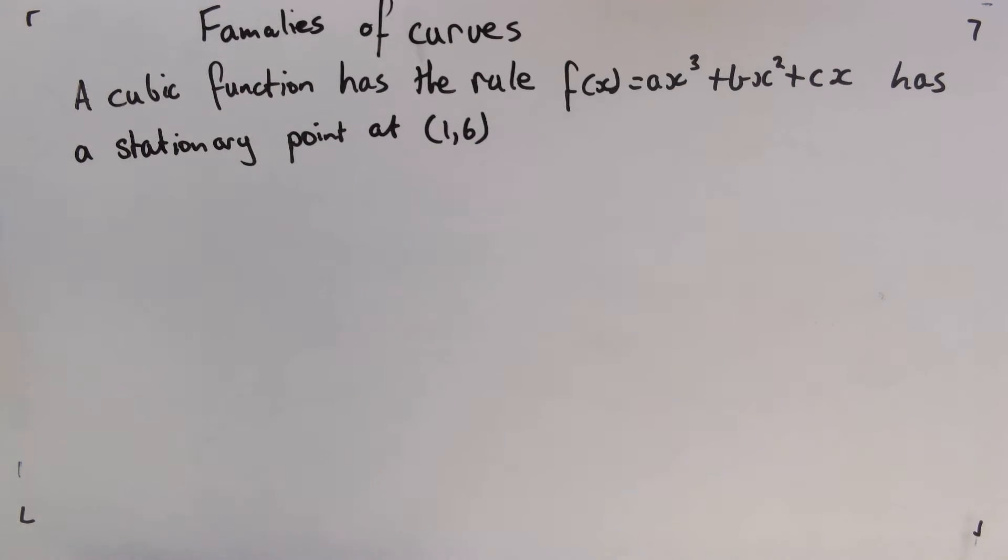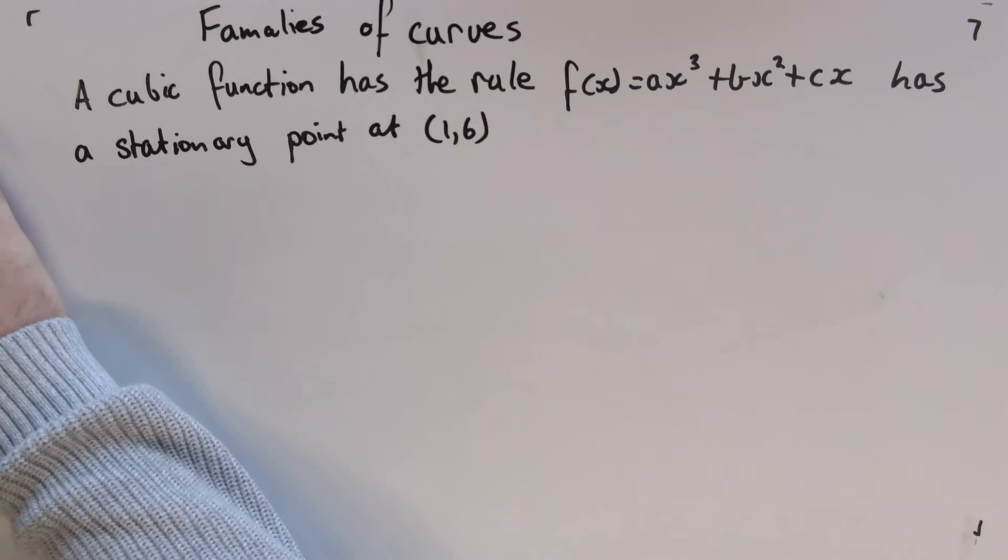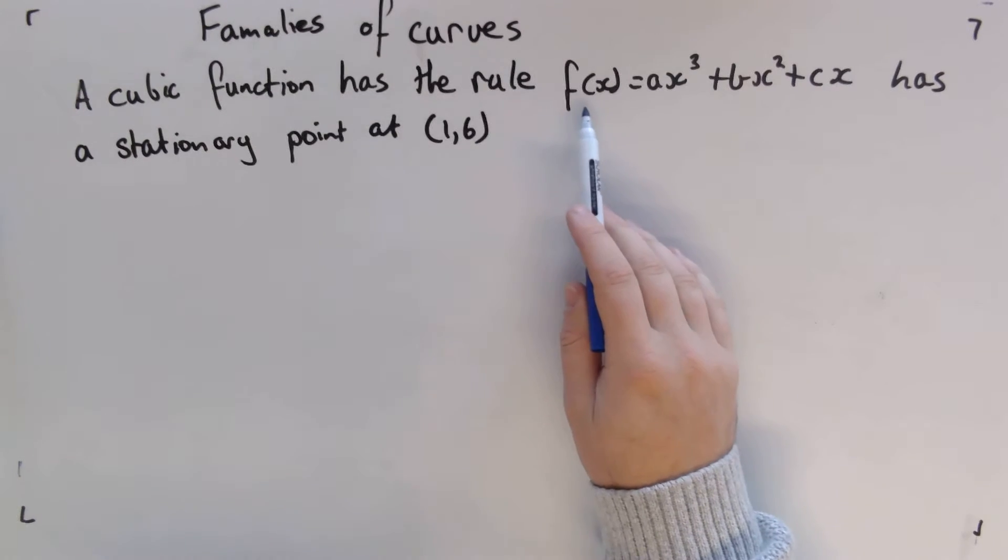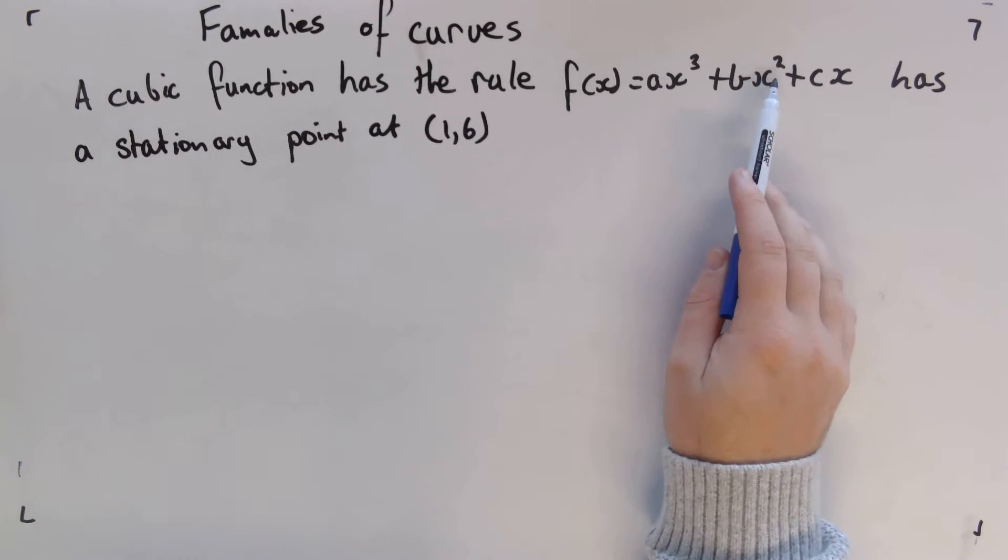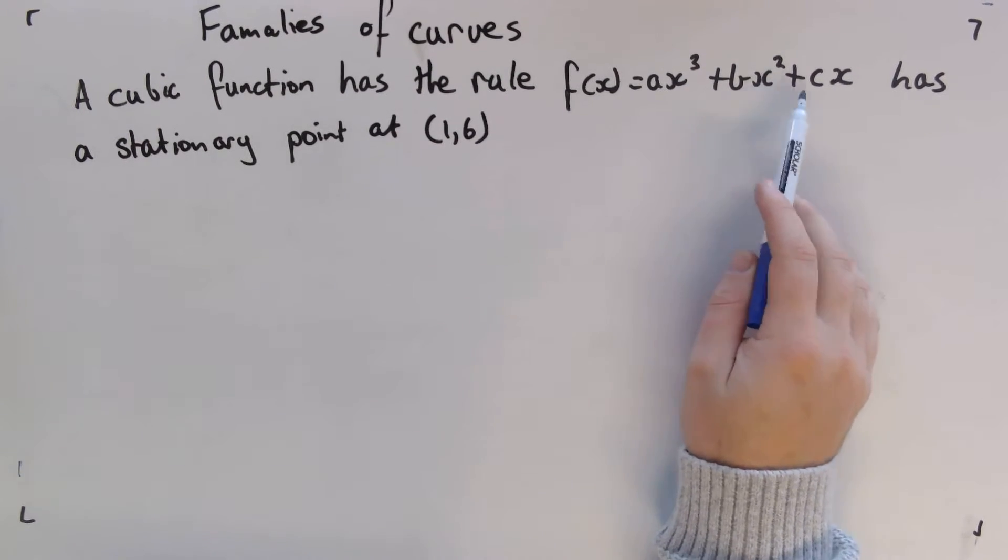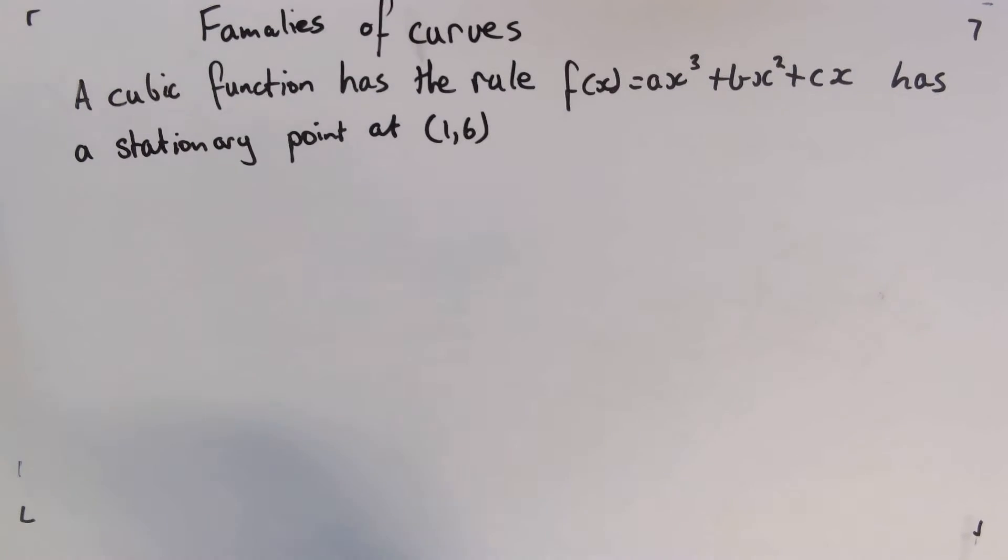So I've got an example here that we'll have a look at. A cubic function has the rule f(x) = ax³ + bx² + cx and it has a stationary point at (1,6).